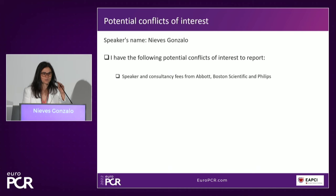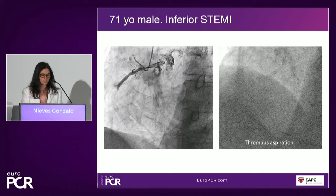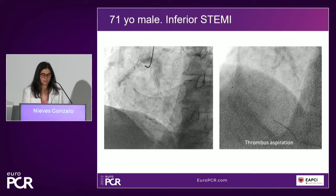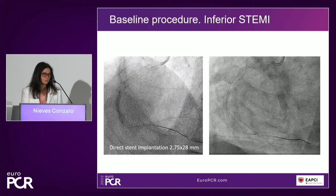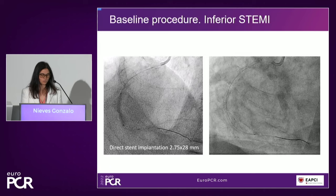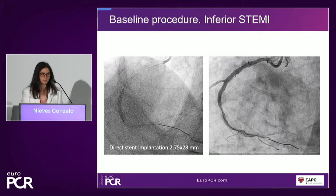Hello, good afternoon everyone. I'm going to present a case of a 71-year-old male who presented initially with an inferior STEMI. You can see his right coronary artery occluded. At the time, the operators decided to treat this with thrombus aspiration, and then proceeded with primary PCI — stent implantation of a 2.75 by 28 millimeter stent. You can already appreciate that something is not going well: after implantation, you can see a waist in the balloon that is not opening properly, and clearly there is a significant degree of under-expansion.